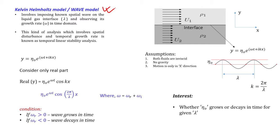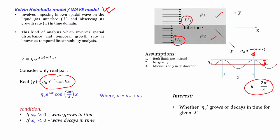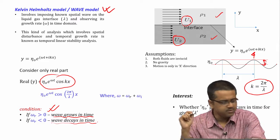In the Kelvin-Helmholtz model, both fluids are inviscid with a variation in density, having velocities u1 and u2. Small perturbations created on the droplet surface are modeled accordingly. If we consider only the real part, omega is the growth rate, lambda is the wavelength, and k is the corresponding wave number. If omega_r is greater than 0, the wave grows in time; if less than 0, it decays.